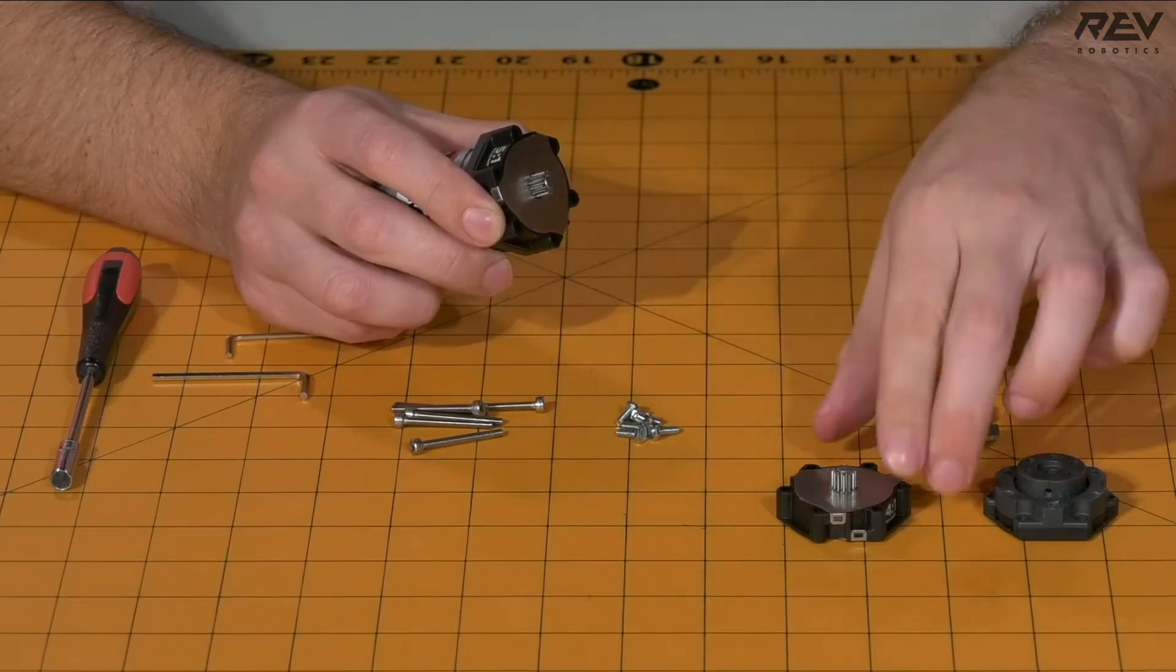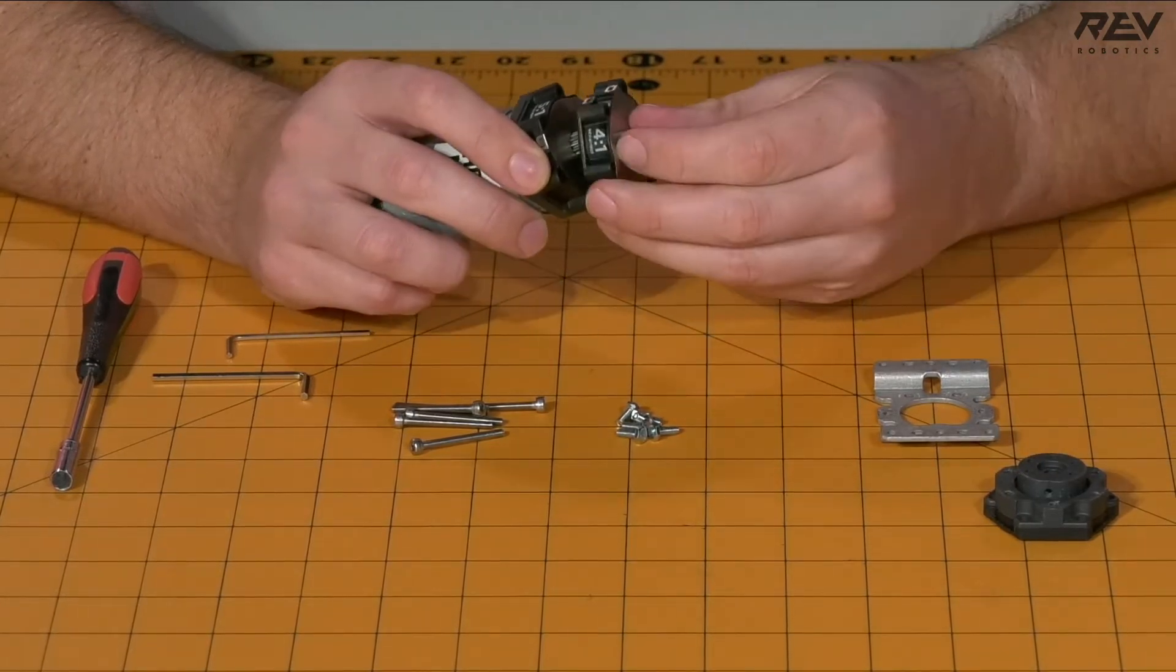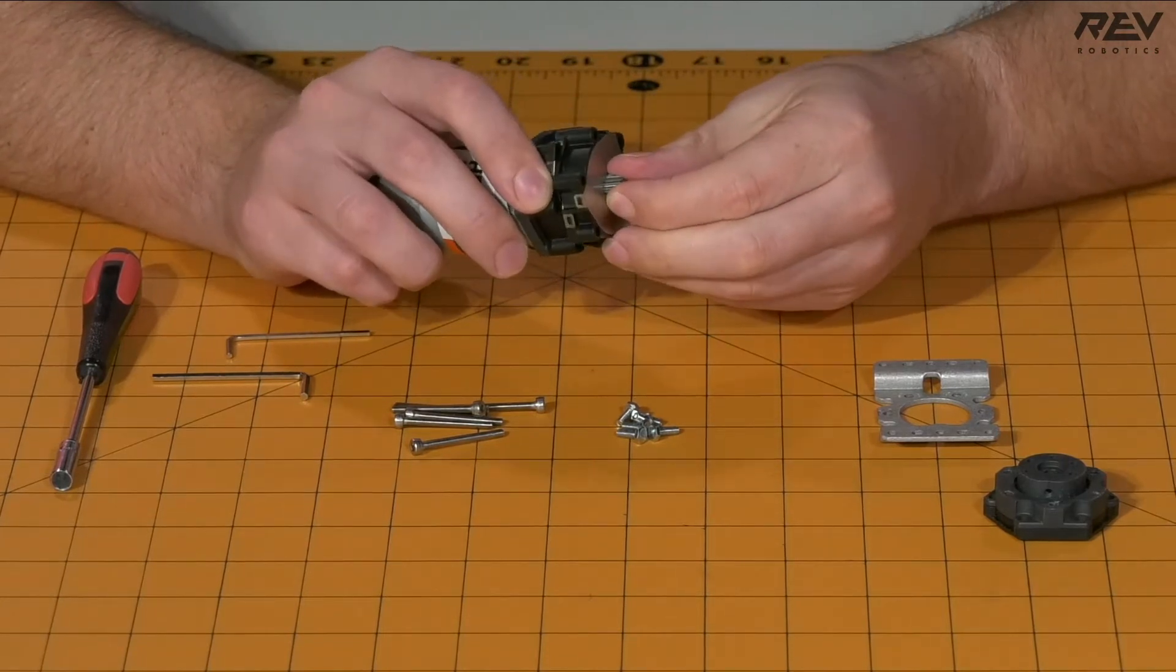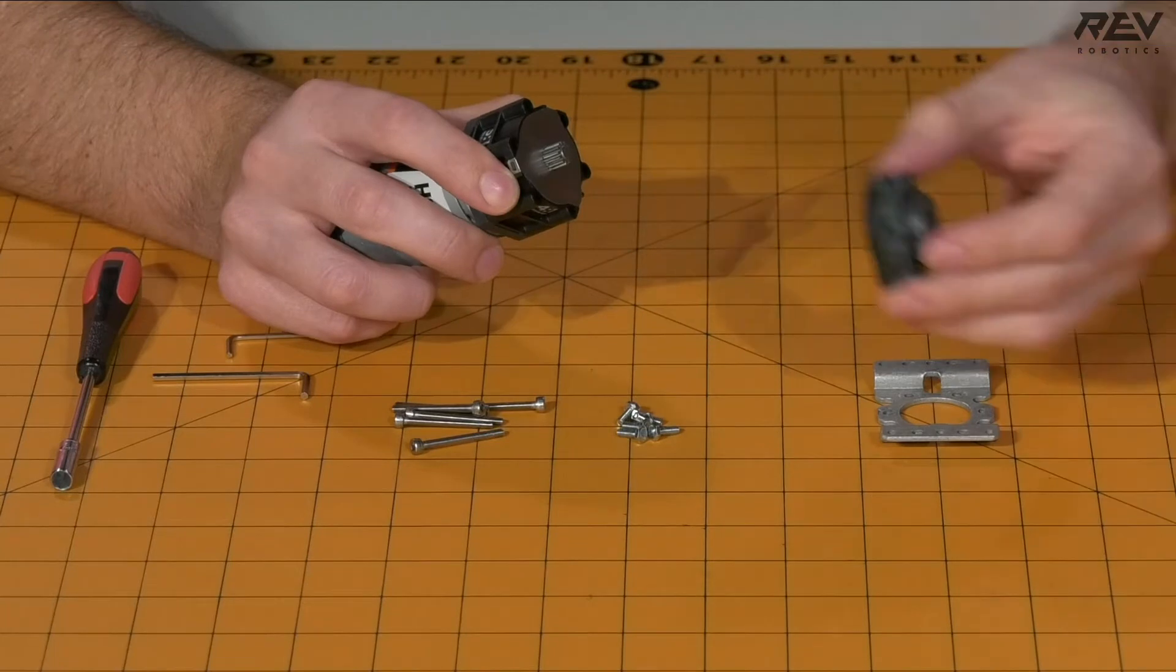After you get the 5-to-1 cartridge on, you're going to want to do the same with the 4-to-1 cartridge followed by the output.